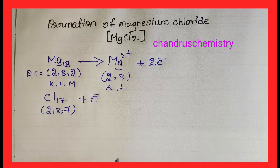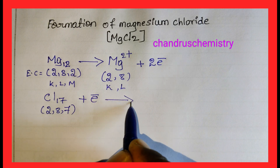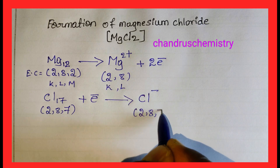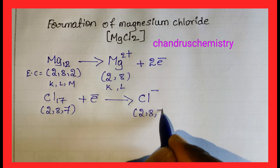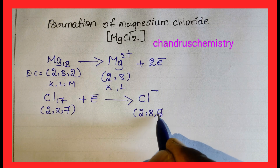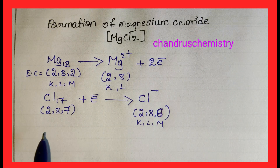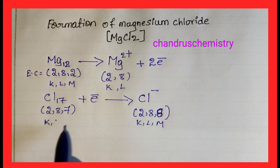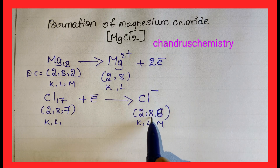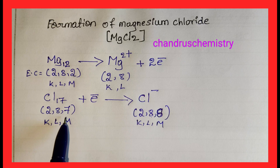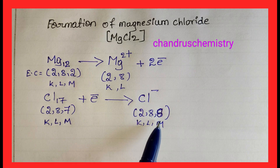Chlorine accepts 1 electron and becomes Cl-. Its electronic configuration changes from 2,8,7 to 2,8,8. Comparing before and after: K shell has 2 electrons, L shell has 8 electrons, and the M shell goes from 7 electrons to 8 electrons. By accepting 1 electron, Chlorine forms an anion and achieves octet stability.